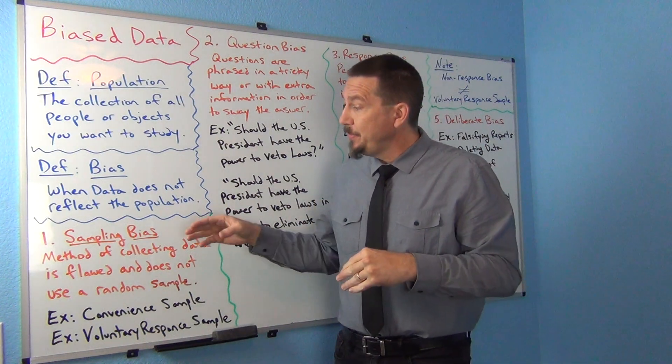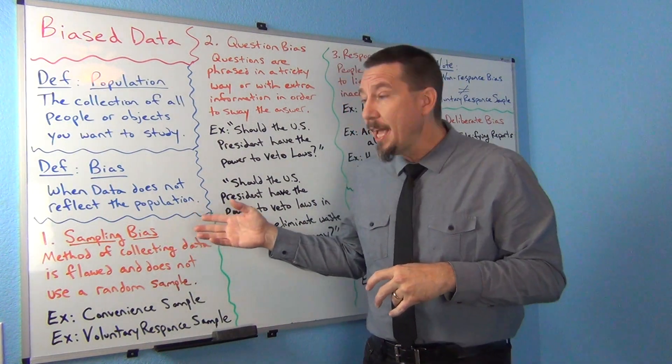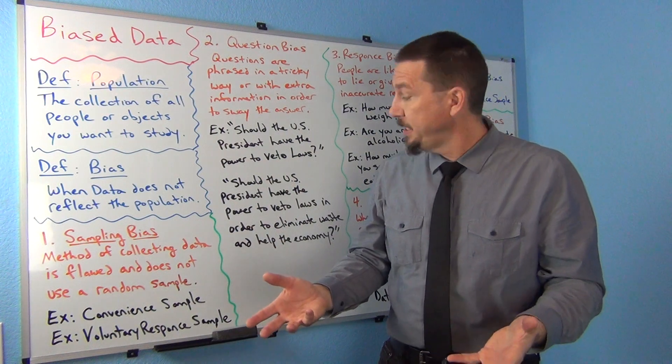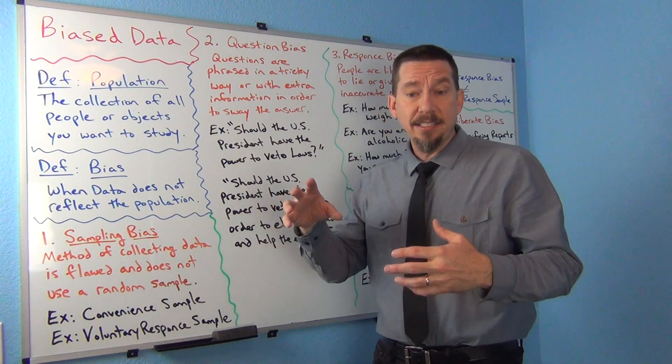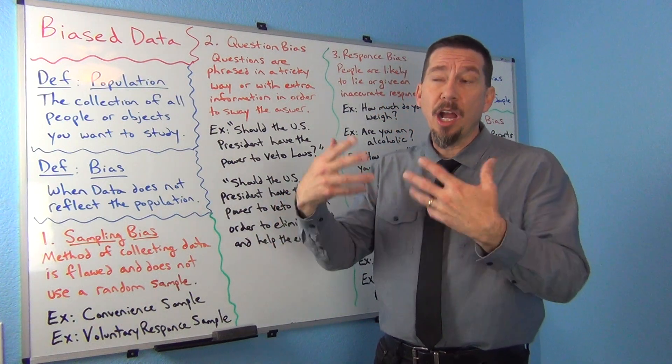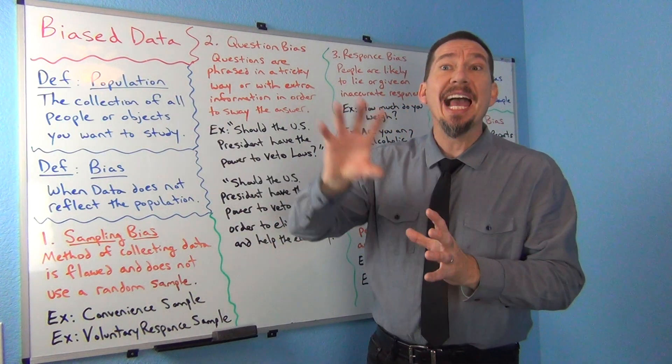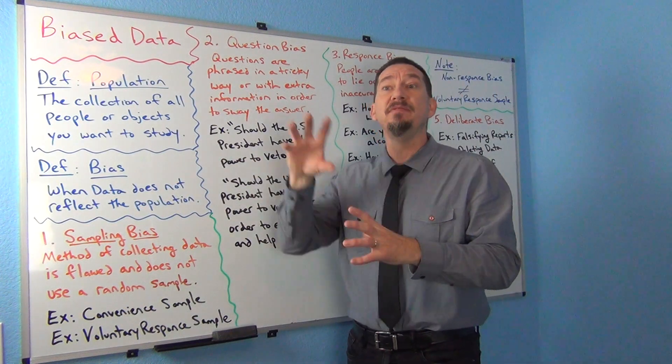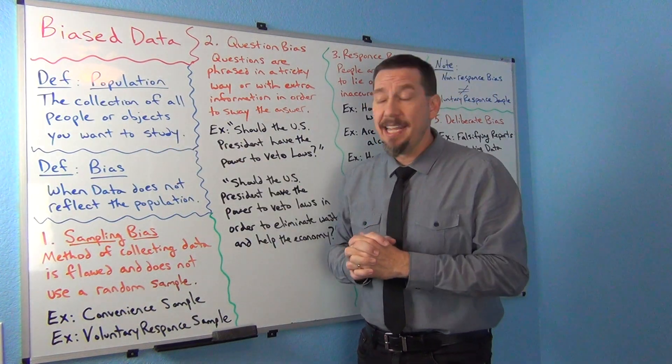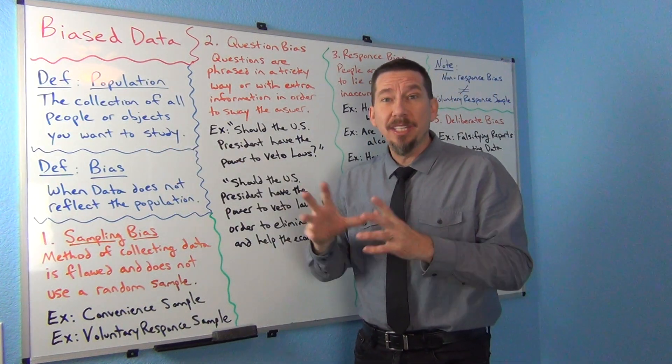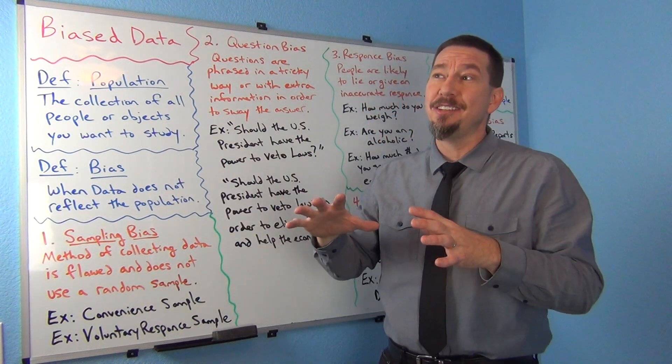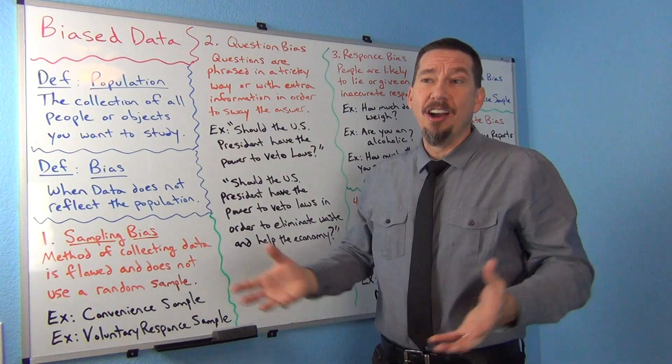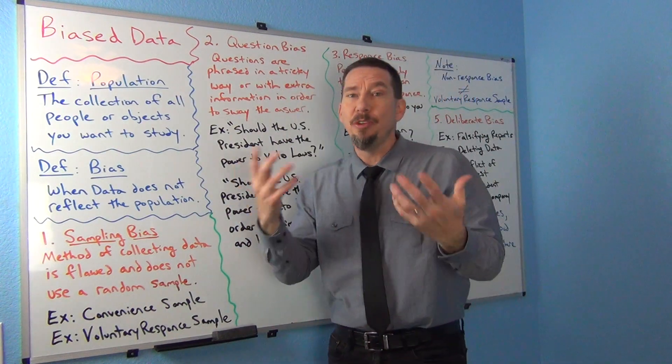One of the things we talked about last time was some various ways that people collect data. A convenience sample, for example, is where somebody takes data from people or objects that they have easy access to. It's very convenient for them to get that data. But we found that that really doesn't reflect populations very well.